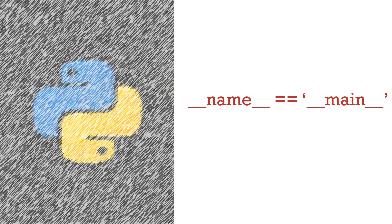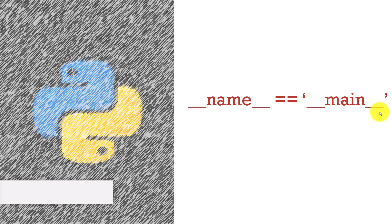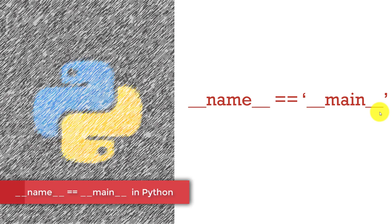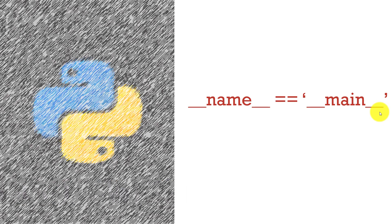Hello people, this is Self Teach. In this video, we learn an important concept in Python: what `__name__ == '__main__'` means. If you have written some programs in Python, gone through code of other developers, or gone through some libraries, then this particular line must have been encountered by you. You must be thinking: what does this line do and what is its significance? So we'll see what this line does.